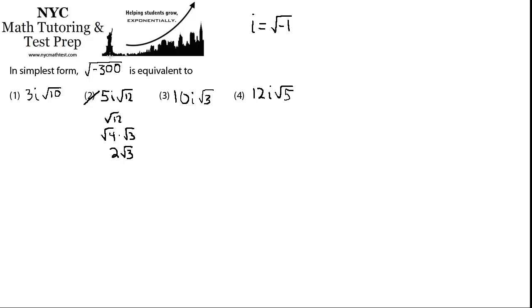Okay, but let's get back to starting with the given and seeing what it would equal. We notice that we're taking the square root of a negative number. So we're going to separate the square root of negative 300 into the square root of negative 1 times the square root of 300.